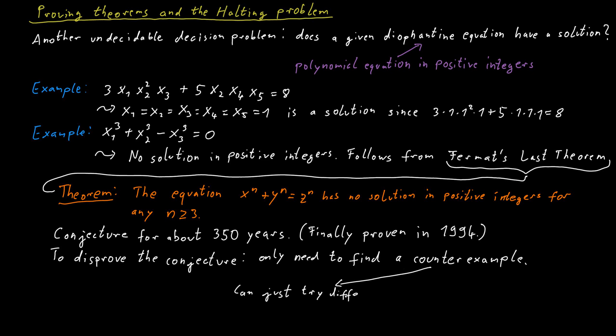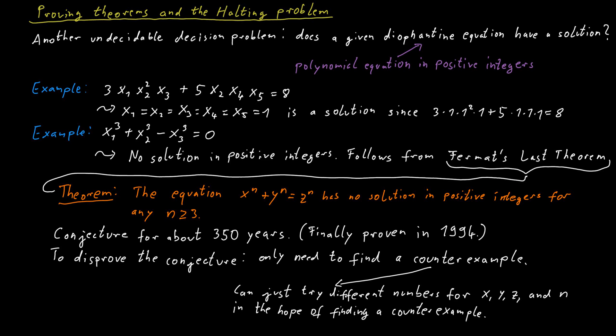At first, people would just try a few different numbers to see if they give a counterexample to Fermat's Last Theorem. But then computers were invented, so why do this by hand? You could just ask a computer to generate values for x, y, z, and n, try them, and report once a solution is found. Here would be a simple computer program we could write to try all possible values in search of a counterexample to Fermat's Last Theorem.